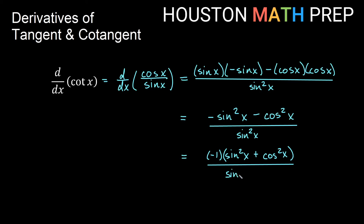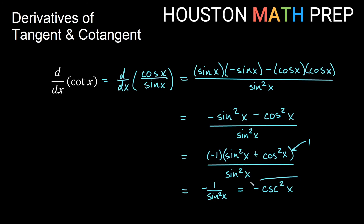So what is sine squared x plus cosine squared x? Well, that's just 1 again. So we get negative 1 over sine squared x. Now remember this is like saying the reciprocal of sine x, squared. The reciprocal of sine x is cosecant x. So our derivative for cotangent of x is actually negative cosecant squared of x.